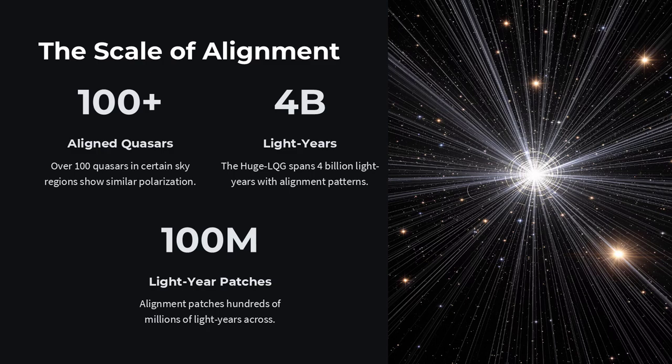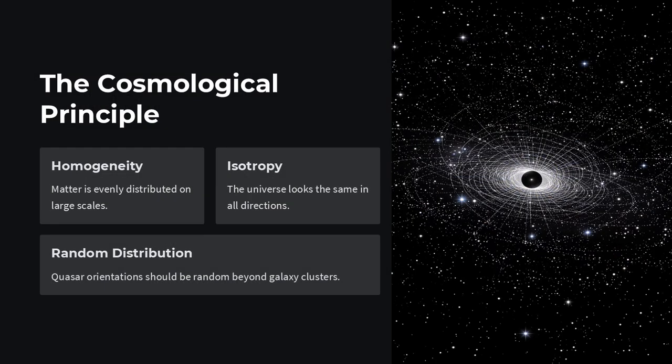How could light from objects so far apart with no chance to talk to each other end up synchronized like this?